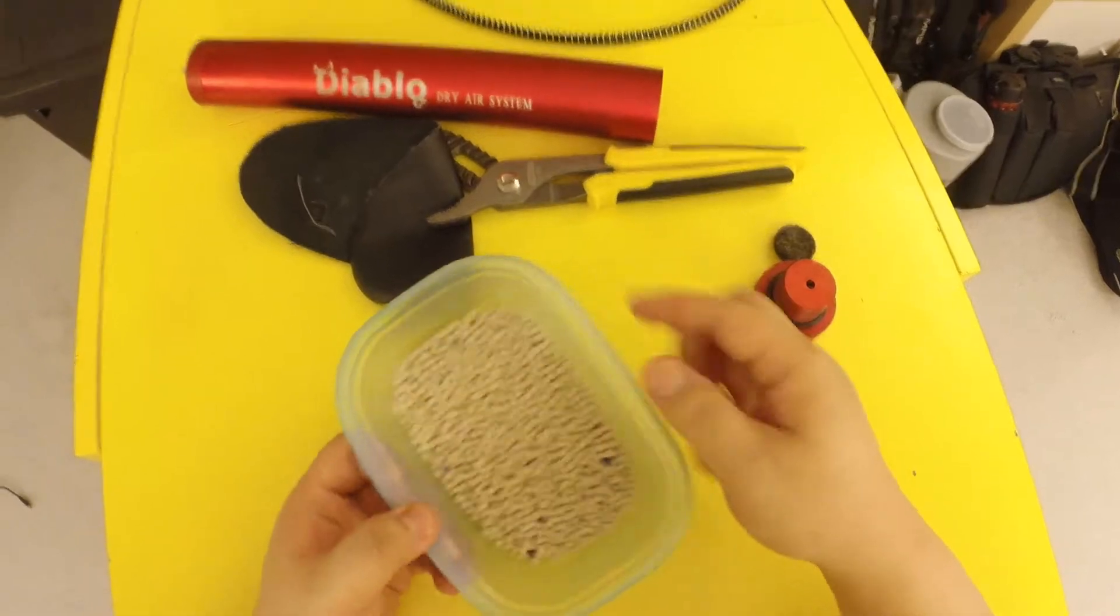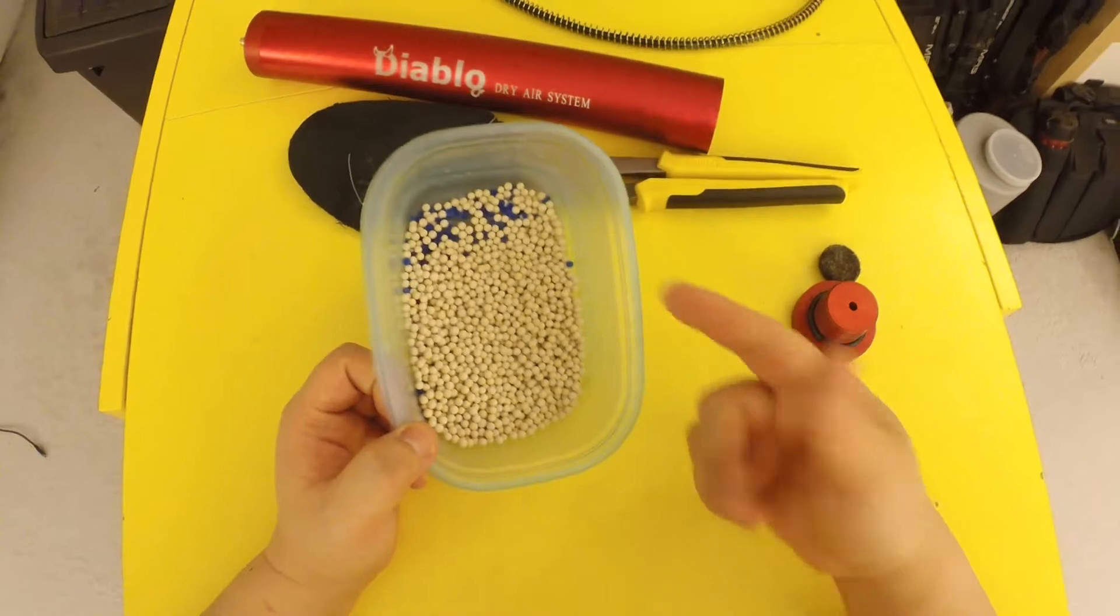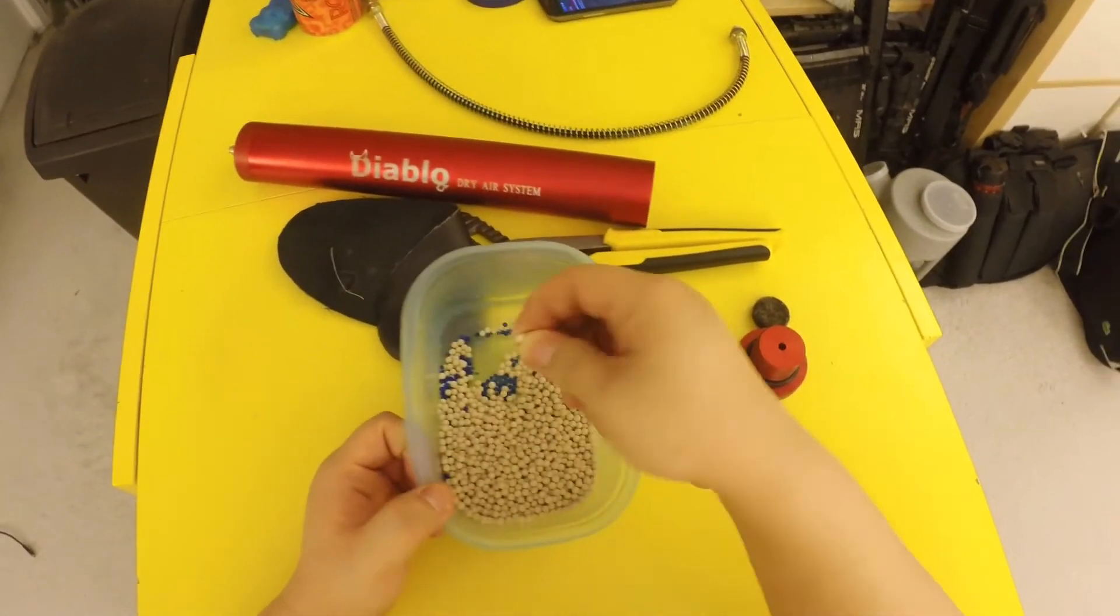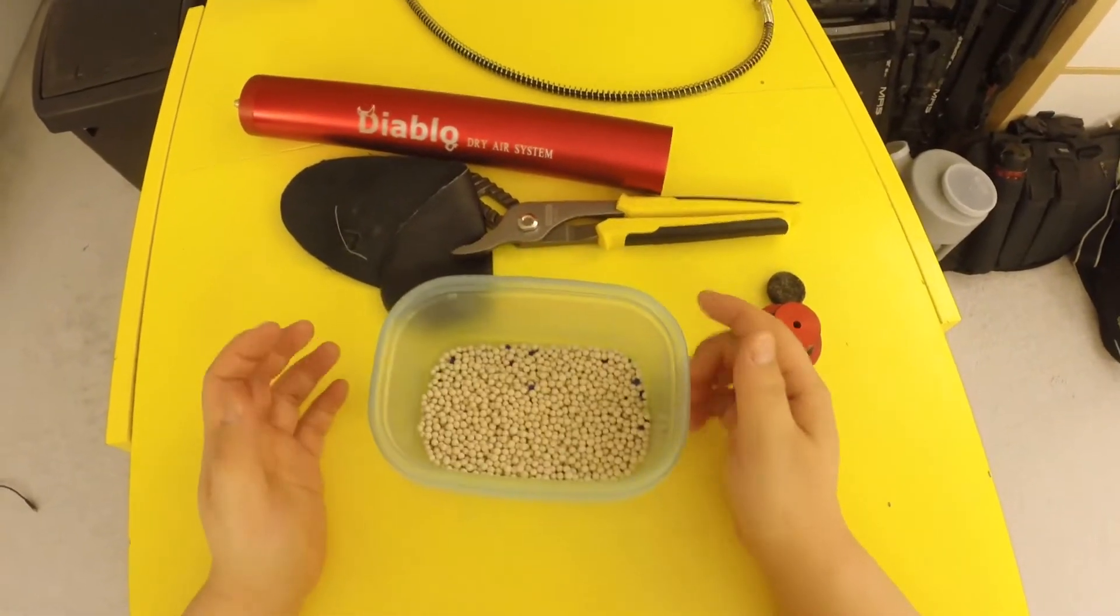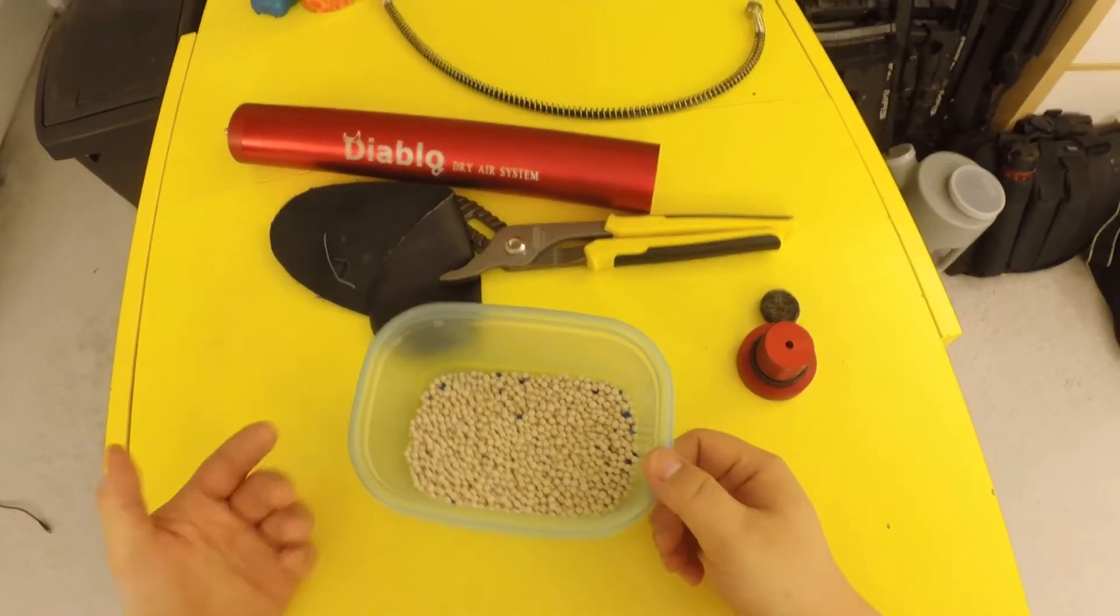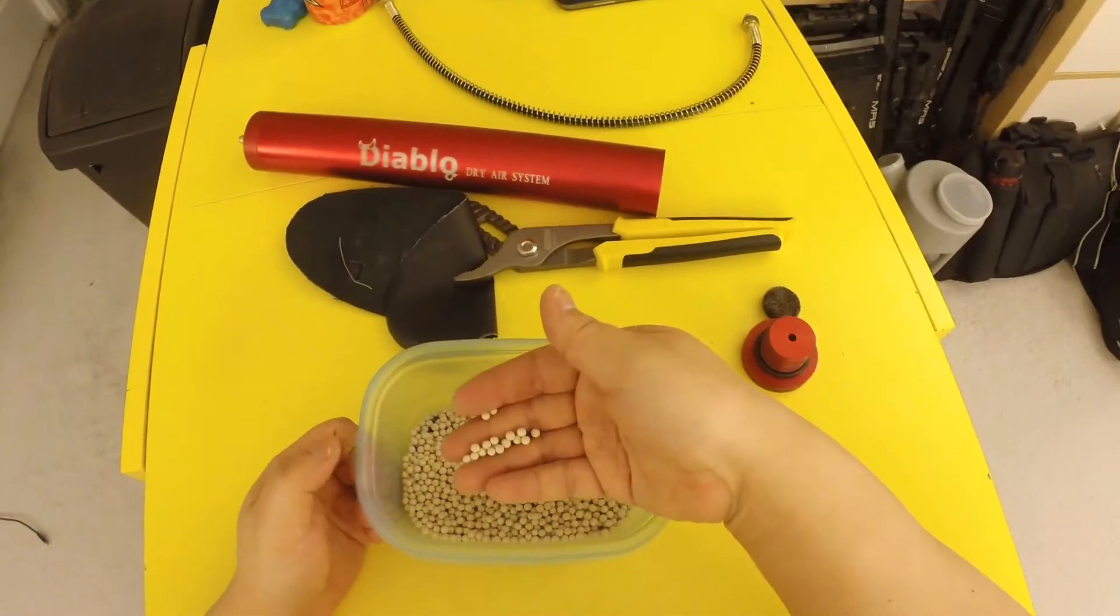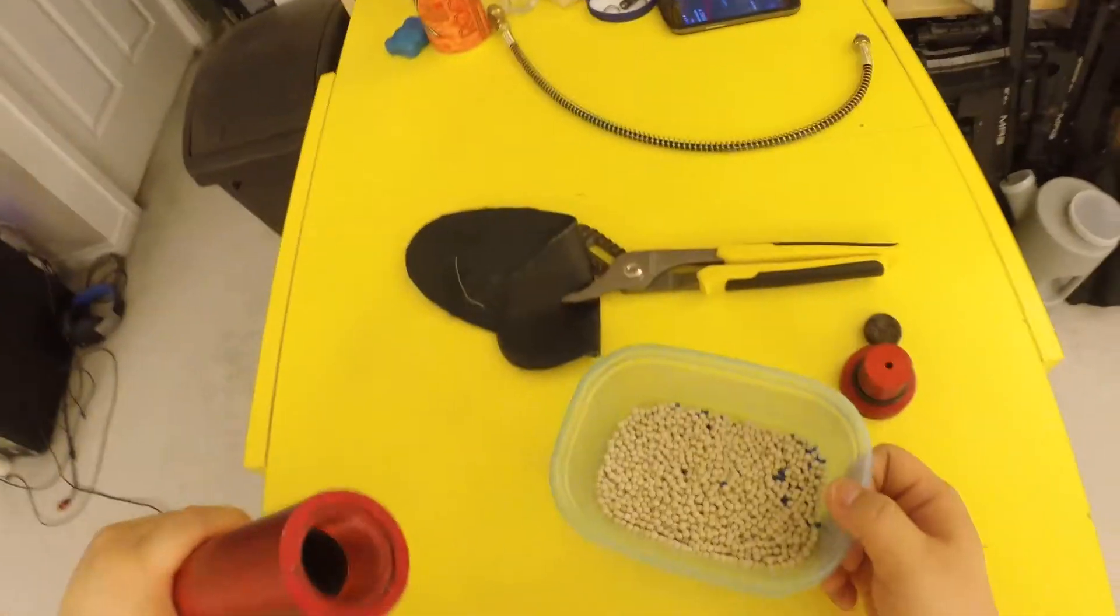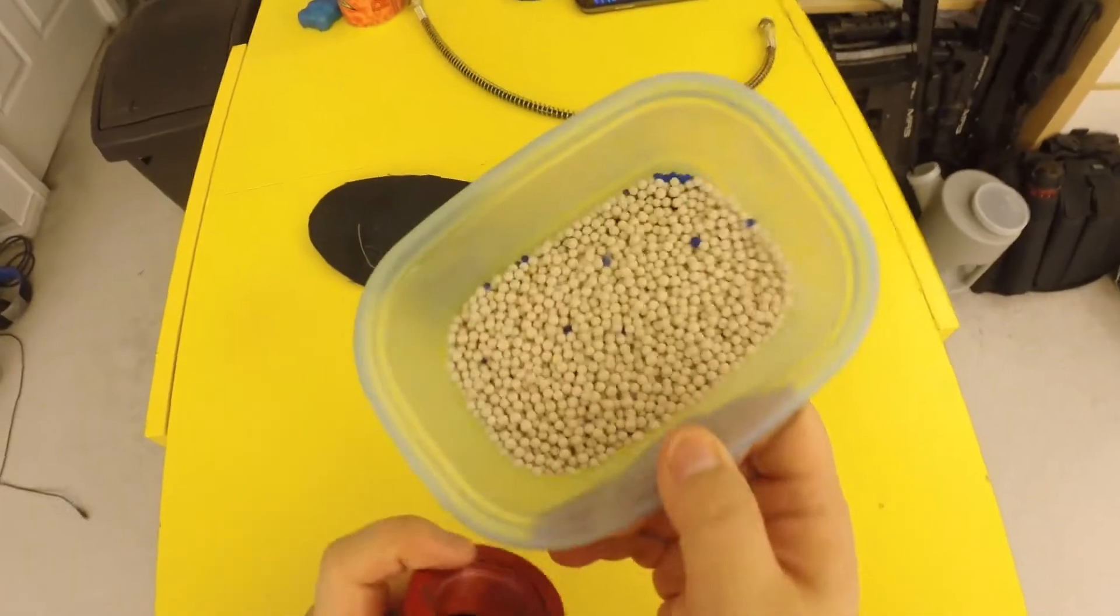When they're used up, these things will turn pink. So when they turn pink, you take all of these things, put it on a baking tray, and then you bake it in low heat like 375, something like that. Bake it for one to two hours and it will dry everything up. After it's all dried up you can cool it down and pour this back into this tube.